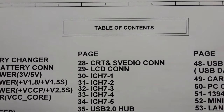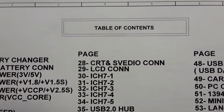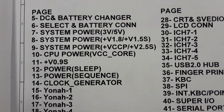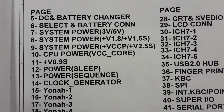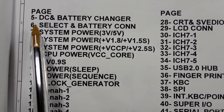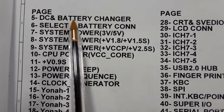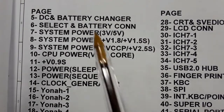In this lecture we are going to see the table of contents. The table of contents is the first page in every motherboard schematic. In it you can find every circuit with its page number. For example, on page five we have DC and battery changer.